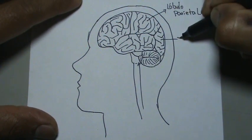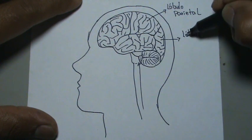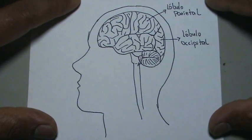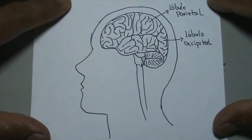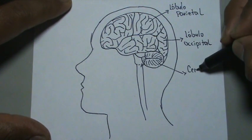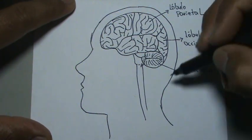Aquí atrás tenemos el lóbulo occipital. Más abajo el de las rayitas, este que está acá abajo se llama cerebelo, el famoso cerebelo.